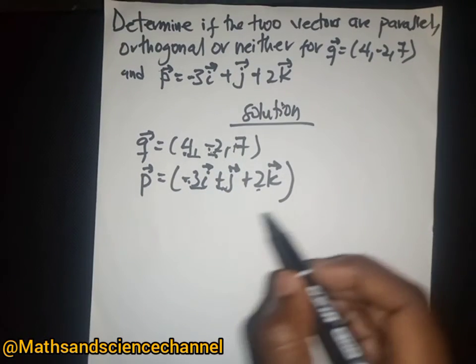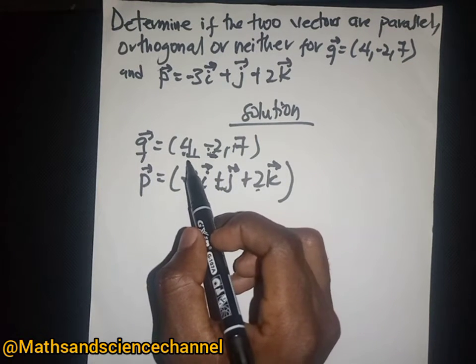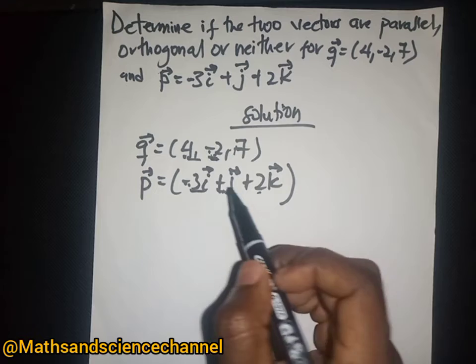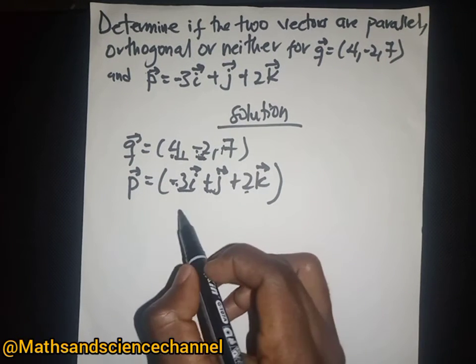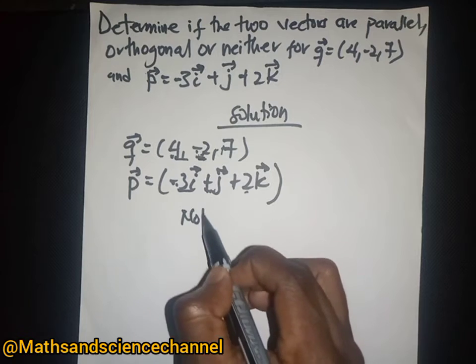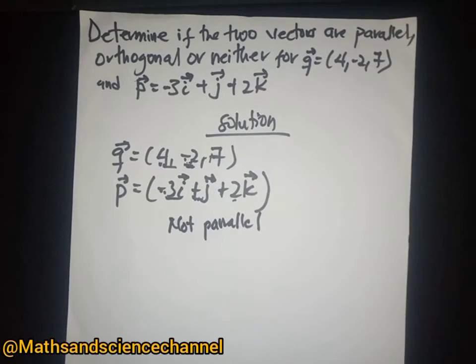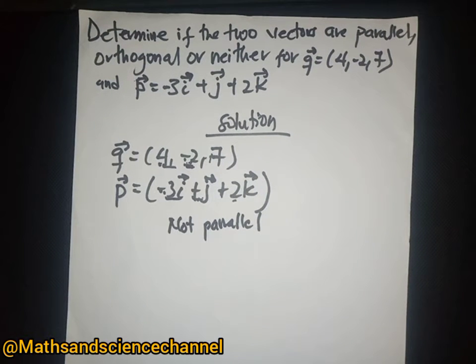The two vectors are not parallel because of their signs. We cannot find a scalar that makes them parallel. Therefore, we conclude they are not parallel. But then, we have to check whether they are orthogonal.